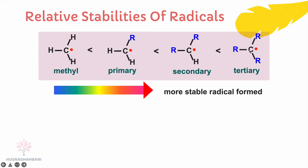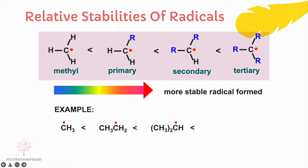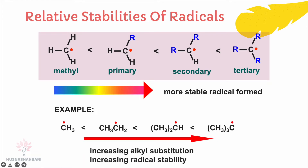The tertiary free radical carbon is the most stable free radical compared to all of them, because this carbon has three carbons attached to it. Increasing alkyl substitution increases the stability of free radicals.